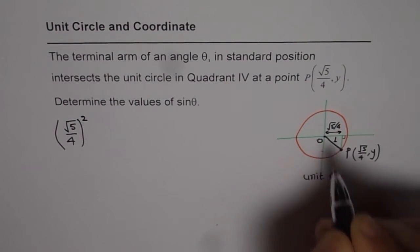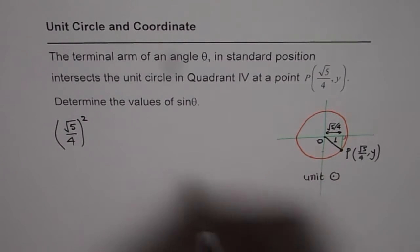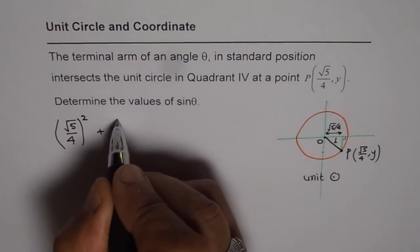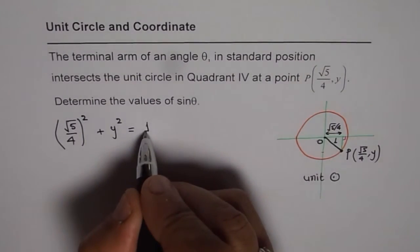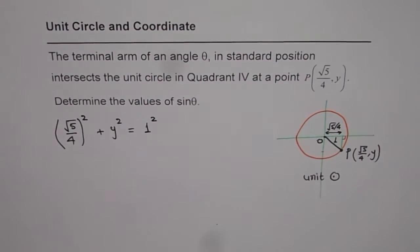From here to here. And y value we don't know. We'll write y square. Square of these should be hypotenuse which is given to us as 1. 1 square. So that becomes a simple equation to solve.